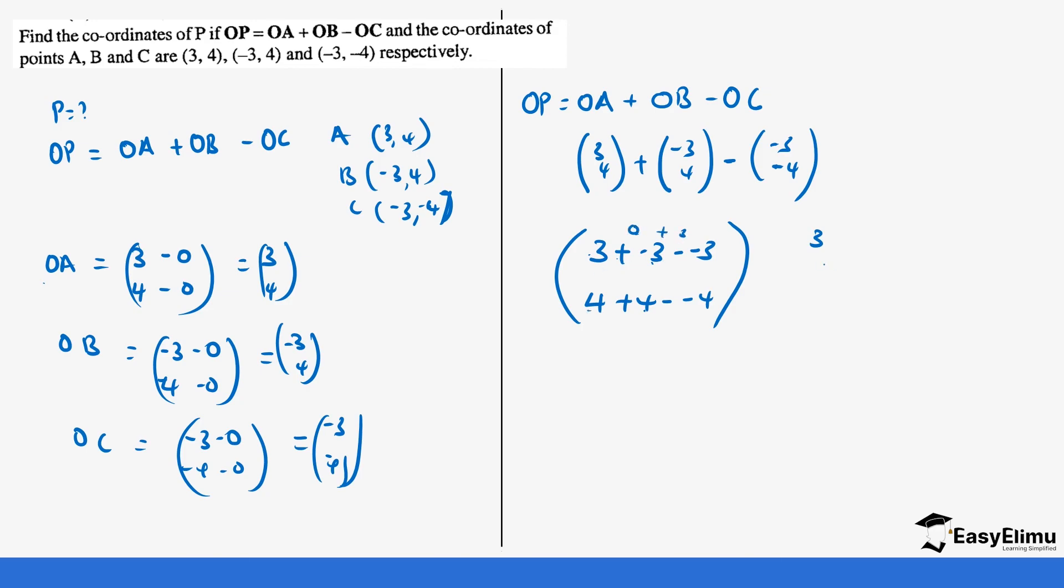So 4 plus 4, you get 8. Minus minus is positive. So 4 plus 4 plus 4 basically, which would give us 12. And so our OP is going to be (3, 12). So that means our coordinate of P is going to be (3, 12).